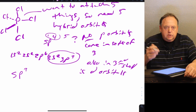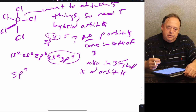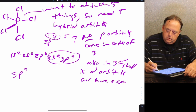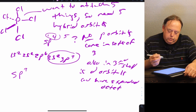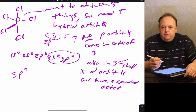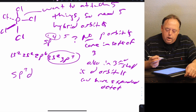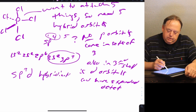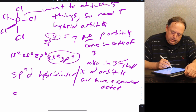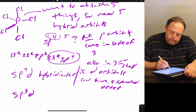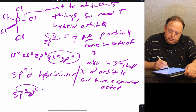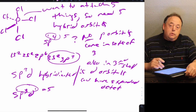Also in the third shell are d orbitals. That's why phosphorus can have an expanded octet — because it has d orbitals available. So if you want to attach five things, you mix five orbitals: take the s, take three p's, and take one of the five d's. This gives you sp3d hybridization. One s, three p's, one d — adding those exponents gives you five, which is what you need to attach five things.